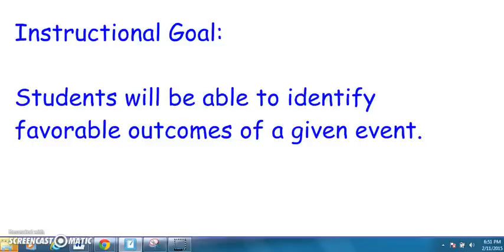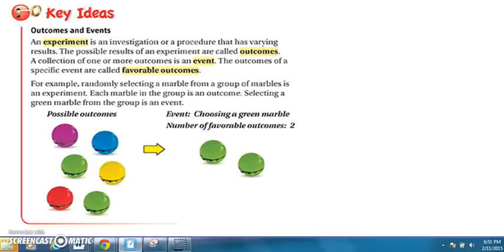Today's instructional goal is students will be able to identify favorable outcomes of a given event. If we reference our key ideas from this week, we see four highlighted vocabulary terms. I'd like to draw your attention to favorable outcomes. Favorable outcome is the outcome of a specific event. We're going to practice finding some favorable outcomes in this lesson.